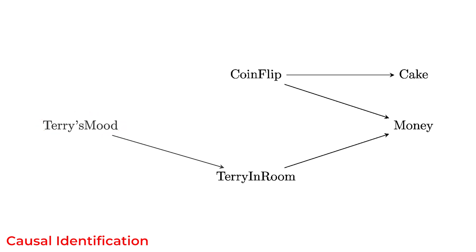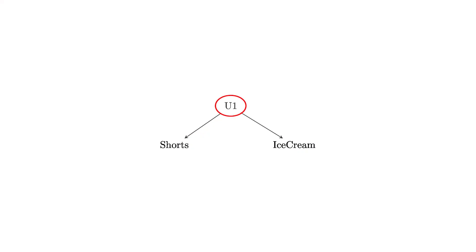Sometimes these unmeasured variables are shown grayed out to indicate they cannot be measured. Sometimes we don't know exactly what an unmeasured characteristic is. We might just put a placeholder variable there — for example, here I've included the variable u1 to indicate some unknown factor that causes both people to wear shorts and eat ice cream. I don't know exactly what it is, but there's something that causes both of these things, inducing a relationship between shorts and ice cream even without a direct arrow between them. Whatever u1 is — maybe temperature — it induces a relationship between those two.